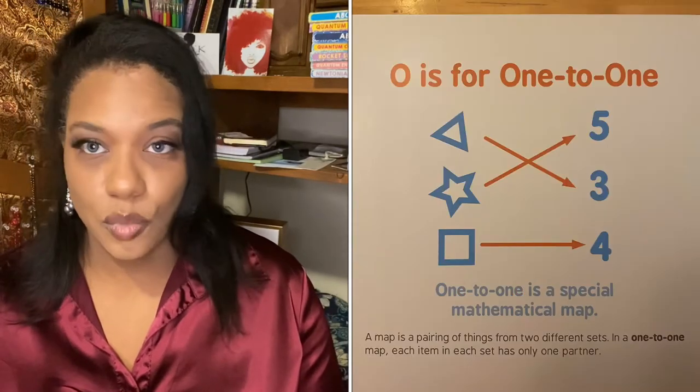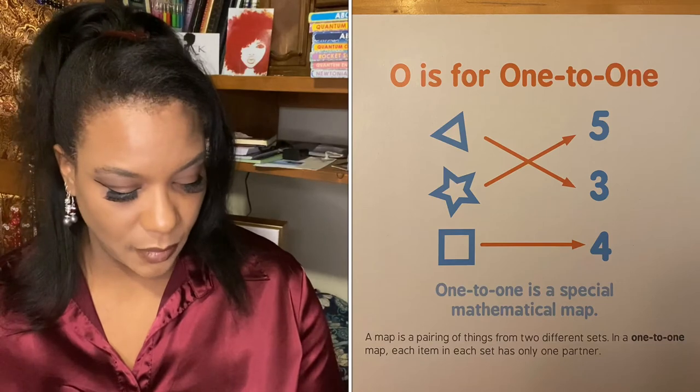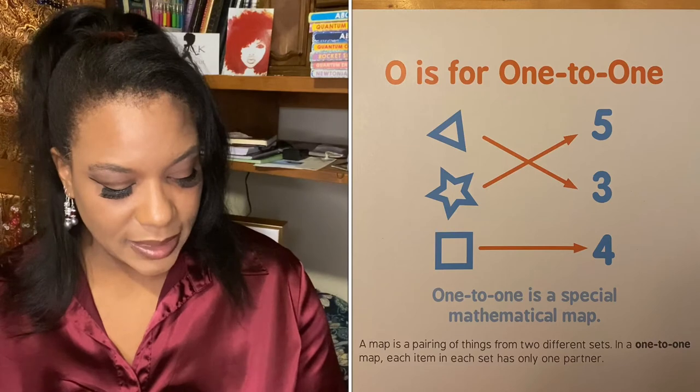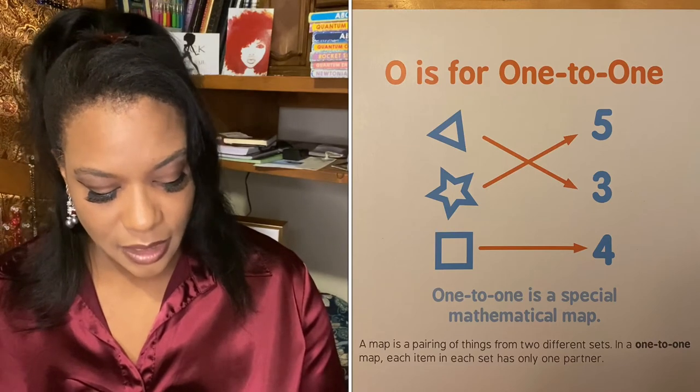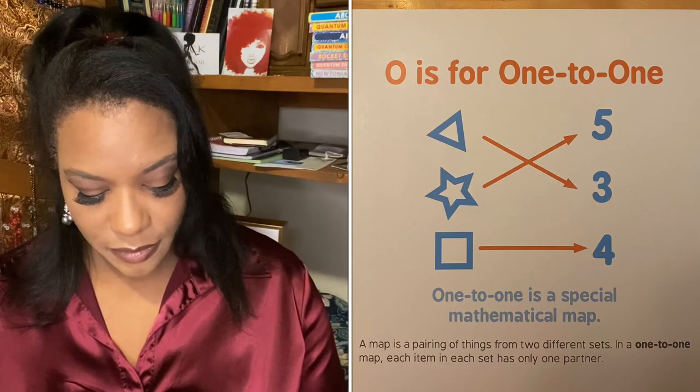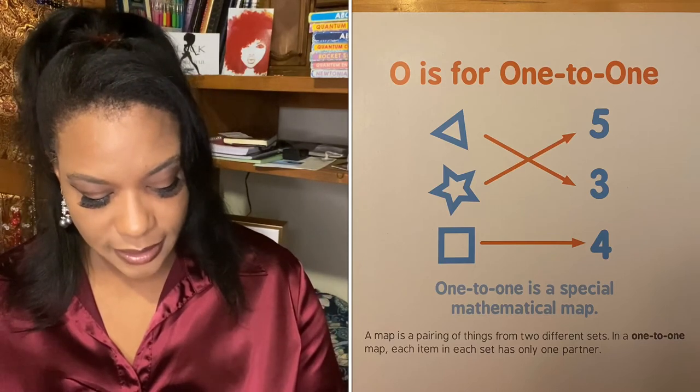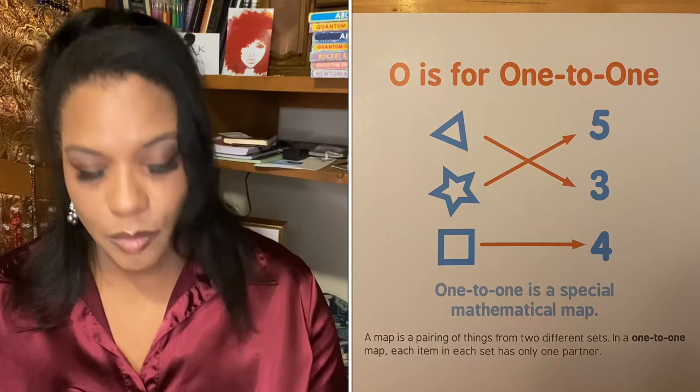O is for one to one. One to one is a special mathematical map. A map is a pairing of things from two different sets. In a one to one map, each item in each set has only one partner.